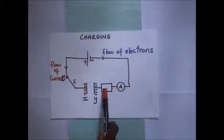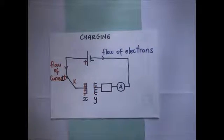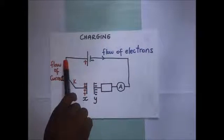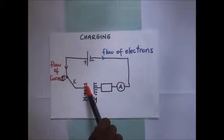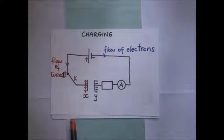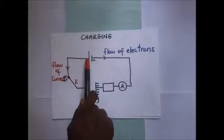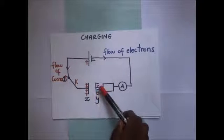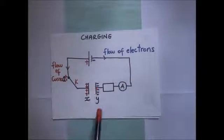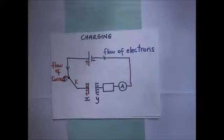When electrons are being repelled towards one plate, they do work against the repulsive forces of the electrons already there. Likewise, when the positive terminal attracts electrons from the positive plate, those electrons work against the attractive forces of the positive charges already there. That work is what is actually being stored in the field, stored in the form of electrical potential energy.